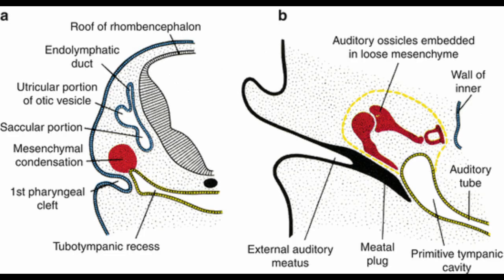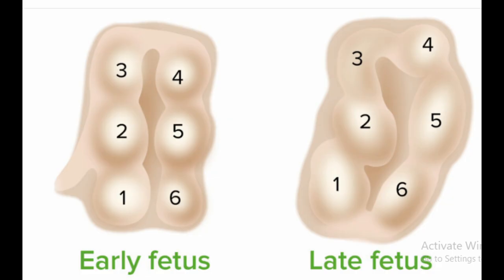The middle ear ossicles initially form around the 6th week of development. The malleus and incus develop from Meckel's cartilage of the 1st pharyngeal arch. The stapes has a dual origin: the stapes superstructure is from Reichert's cartilage of the 2nd arch, and the footplate develops from neural crest cells — the otic cyst.